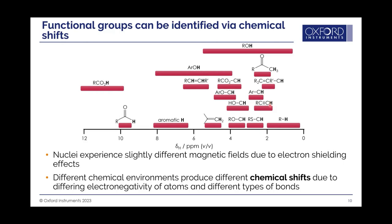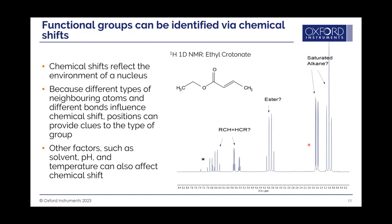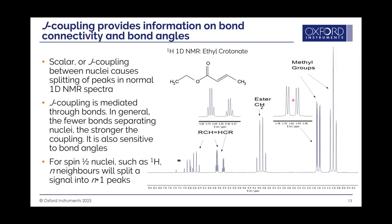The first piece of information you want to see is where the peaks fall on the x-axis — this is known as the chemical shift. This tells you something about the chemical environment of the protons. In the ethyl crotonate spectra, we can say the molecule probably contains alkane, ester, and alkene protons based on where the chemical shifts lie for these various peaks. So the first piece of information we can get is what kind of functional groups are present in your molecule — essentially telling you something about bond connectivity and bond angles.